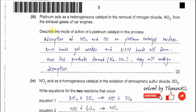Part B3: platinum acts as a heterogeneous catalyst in the removal of nitrogen dioxide from car exhaust gas. Describe the mode of action of the platinum catalyst. The mode of action involves three stages: first, adsorption; second, reaction; and third, desorption. These are the three major stages of the heterogeneous catalytic mechanism.